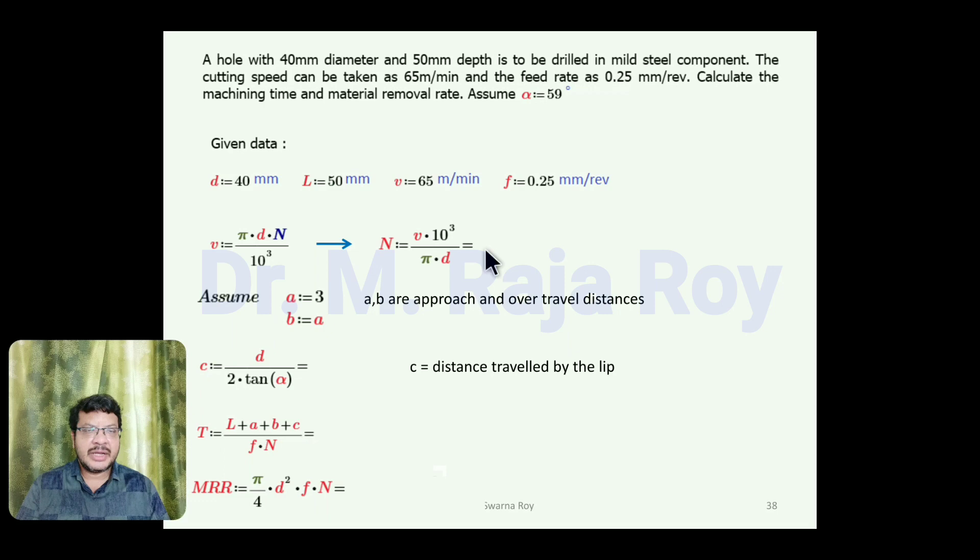You will get N value as 517.25 revolutions per minute, C value as 12.02 mm, machining time T equals 0.53 minutes, and material removal rate is 162,500 mm³ per minute. This is mm³, that's why you get a larger value.